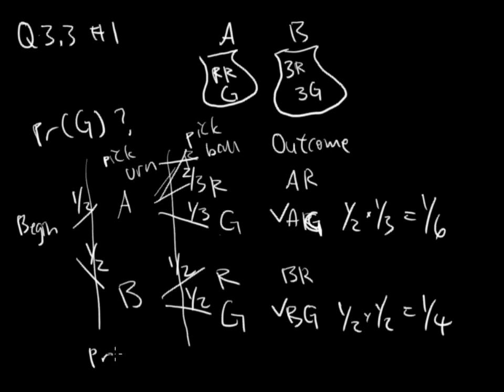The total probability of green is the probability of urn A and green, plus the probability of urn B and green. We add the two, because this is a multi-scenario where A green will work, or B green will work. This is A green or B green, so we add the probabilities.